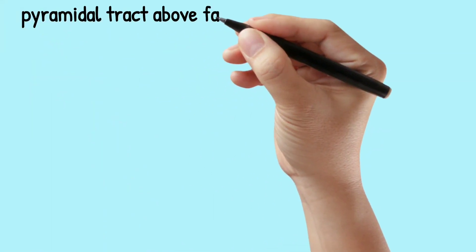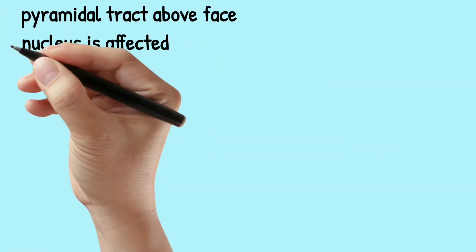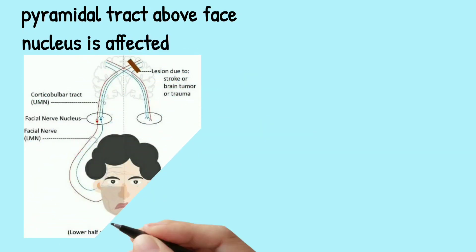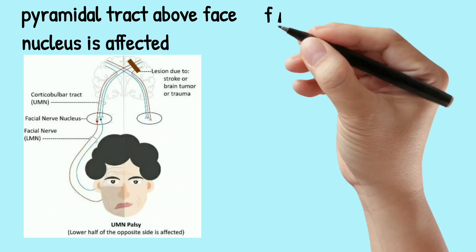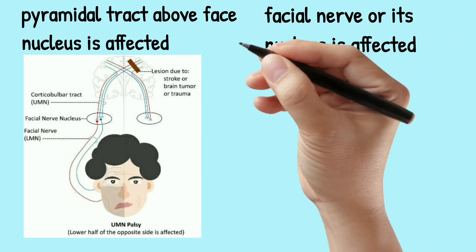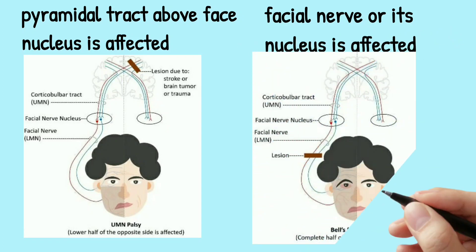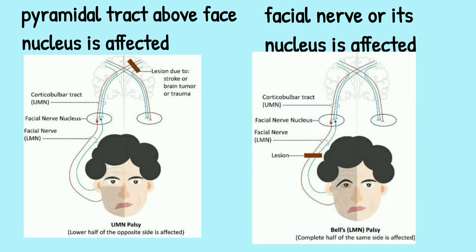UMN type is supranuclear damage — pyramidal tracts above the facial nerve nucleus are damaged. LMN type is infranuclear, where the facial nerve nucleus or the facial nerve itself is damaged. You can see in this picture that any damage above the facial nerve nucleus is UMN type, and any damage below the facial nerve nucleus is LMN type of facial palsy.